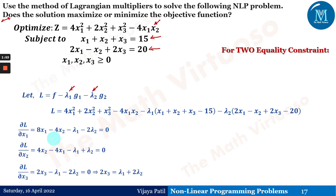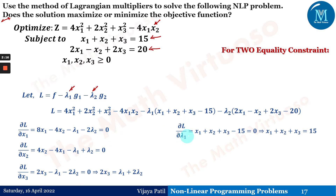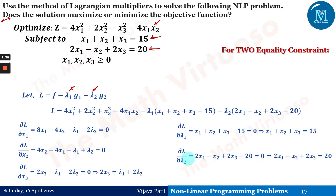The first equation is ∂L/∂x1, the second is ∂L/∂x2, and the third is ∂L/∂x3. Observing the third equation: 2x3 − λ1 − 2λ2 = 0, which means we can express x3 in terms of λ1 + 2λ2. Also, ∂L/∂λ1 gives x1 + x2 + x3 − 15 = 0, and ∂L/∂λ2 gives the constraint equal to 20.